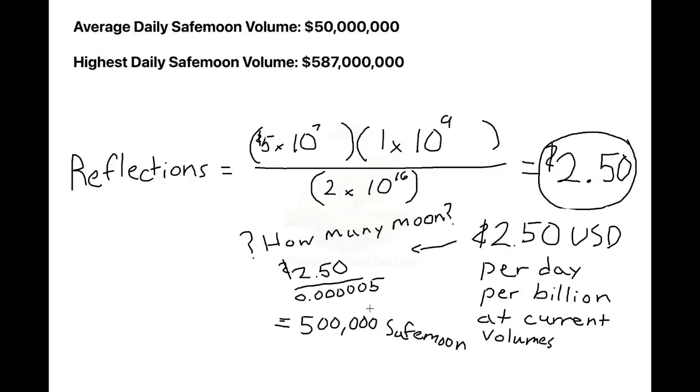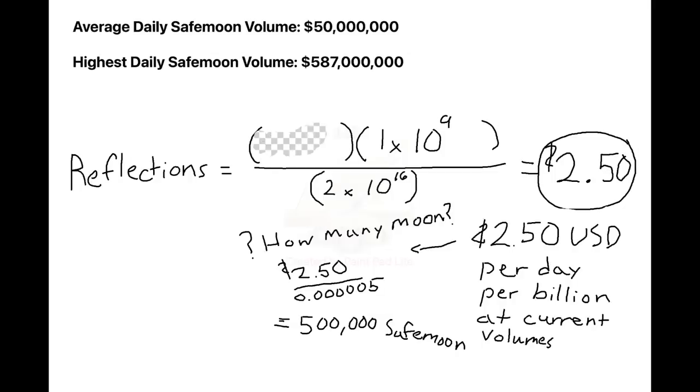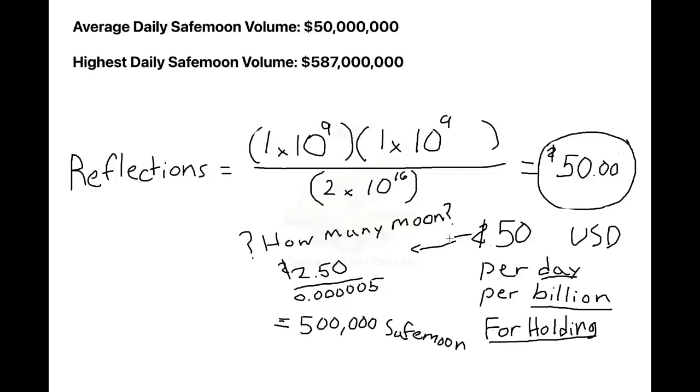At our all-time high, our volume reached as high as 500 million dollars. For a top-tier coin, this is pitiful. Volumes in the billions are common for most coins, and I believe the difficulty in buying and selling SafeMoon has a lot to do with this gap. In the future, I believe we can easily see volumes of 1 billion plus. Let's see how much money that is. If we substitute in values 1 billion for volume and 1 billion coins, we get 50 as our answer: 50 dollars per day per billion coins that you own. Me sitting at 2.5 billion, that would net me $125 per day, or about $43,000 a year, just for holding SafeMoon.